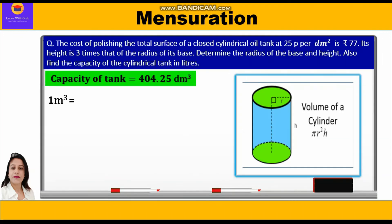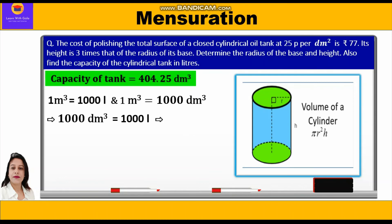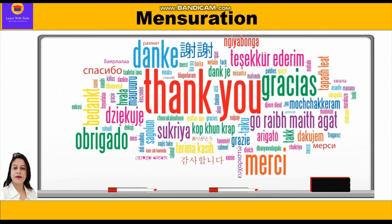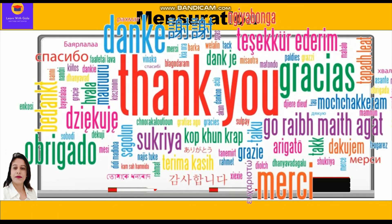We convert the volume into liters. We know 1 m³ = 1000 liters and 1 m³ = 1000 dm³, so 1 dm³ = 1 liter. Therefore, 404.25 dm³ = 404.25 liters. This is the capacity of the tank. Hope you have understood this question. Please don't forget to like and subscribe. Thank you everyone.